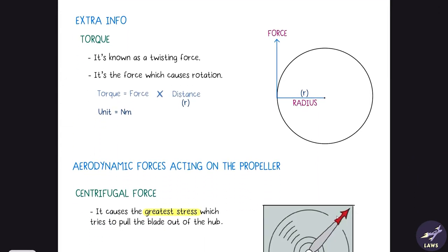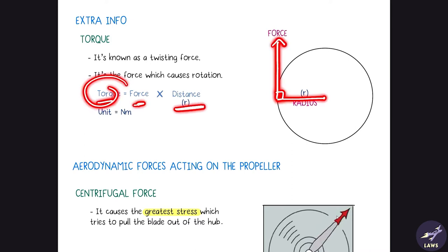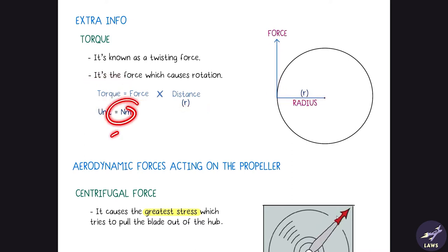Next is torque — a twisting force, the force which causes rotation. If you have a fixed point, a perpendicular distance, and a force, you get torque. Torque equals force multiplied by perpendicular distance; its unit is newton metres.